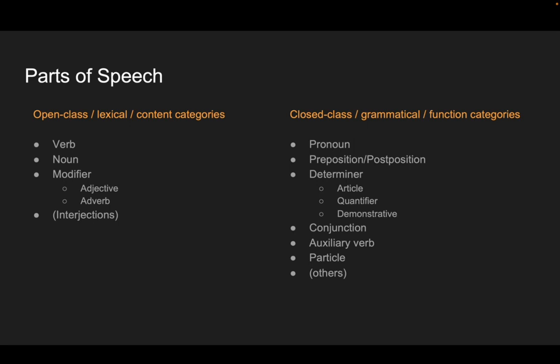The open class, lexical or content parts of speech are verbs, nouns, adjectives and adverbs — which are kinds of modifiers — and then interjections. Most languages have an open class of interjections. The closed class categories include things like pronouns, prepositions if you're speaking English, postpositions if you're speaking Ute, determiners like quantifiers and demonstrative determiners — things that mean this, that, these, or those. English also has little articles like 'the,' 'a,' and 'an.' Those are determiners, conjunctions, ands and ors, auxiliary verbs — very important — and particles.